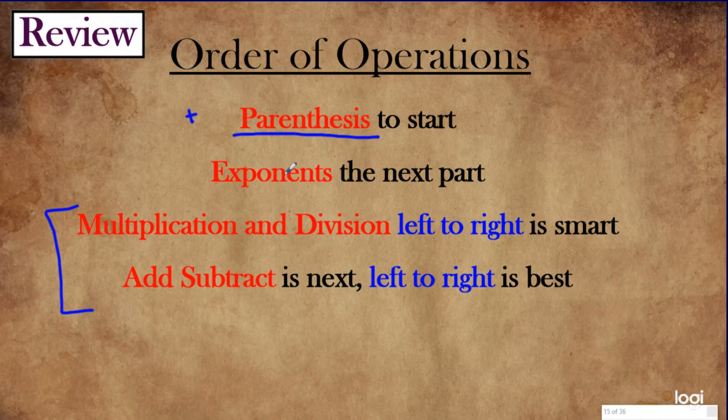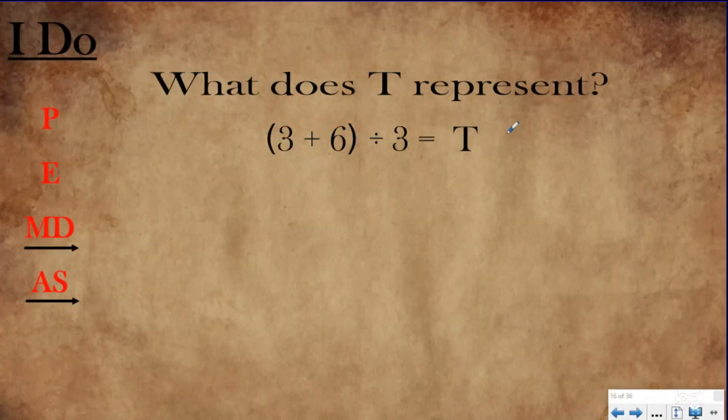Let's take a look at an I do problem where we can use these steps to help us. We're trying to find out what T represents. Now, some of you might remember this problem from yesterday's we do. But yesterday, we didn't have the parentheses, but we had the same operations in the same digits. And when we solved them, we got the answer five. That was our we do problem. It should be in your notes. Well, today, the only thing different is we added parentheses to group the three and the six together.